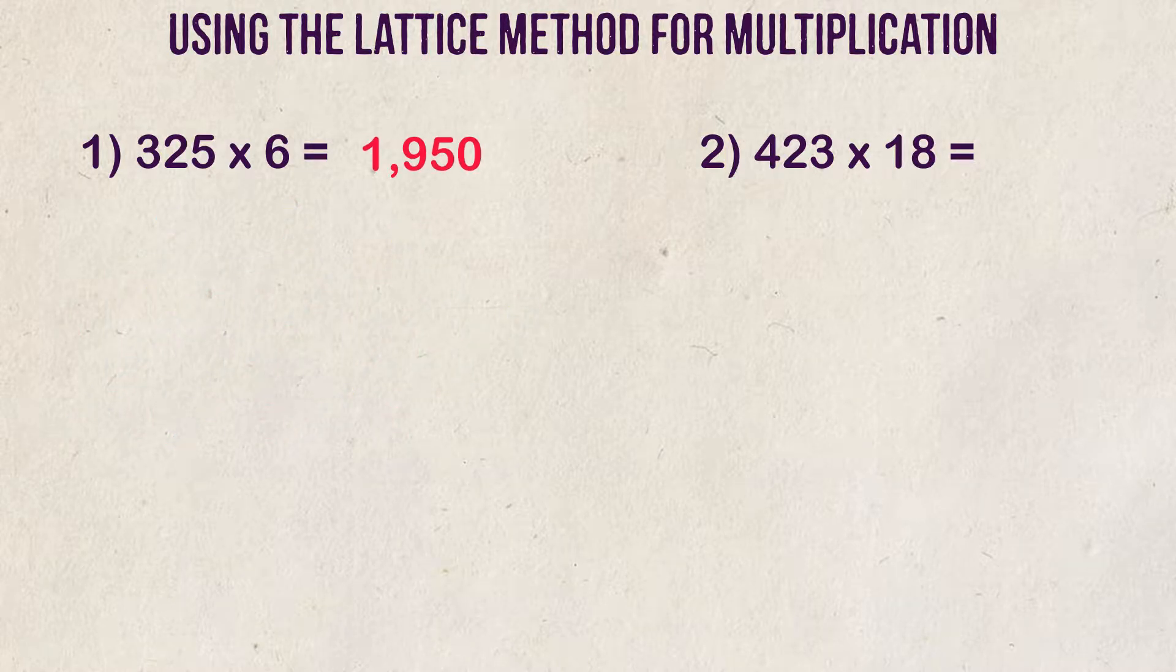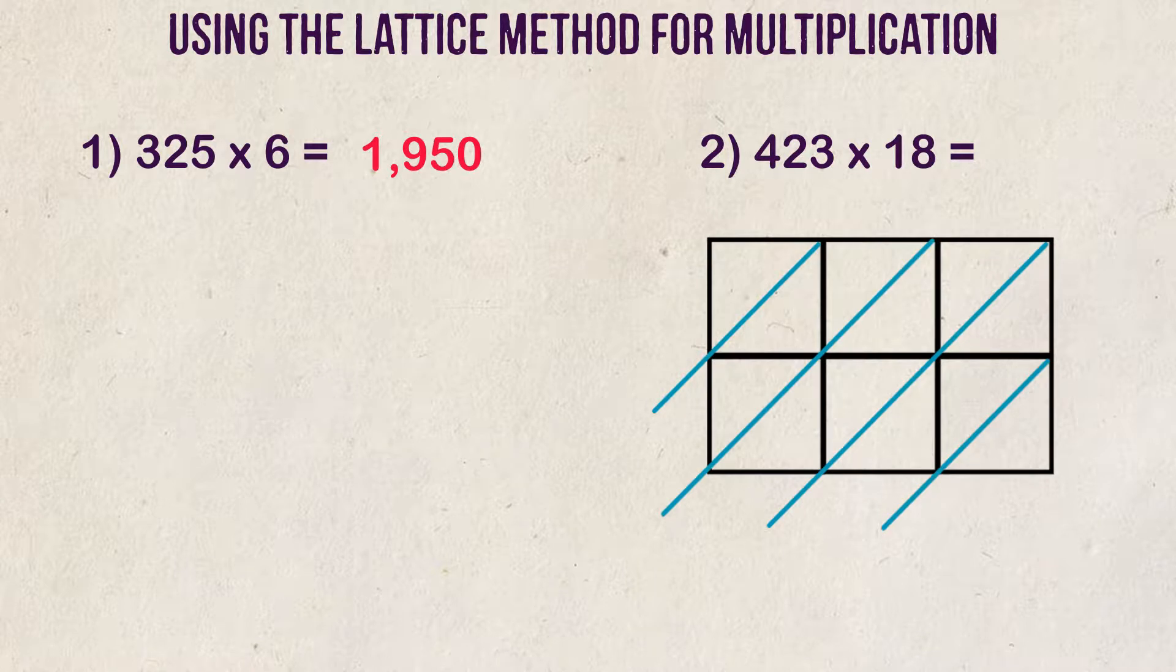Example 2. Let's multiply 423 times 18. To set up our lattice grid, we have 3 columns to put our 423 up top and 2 rows for 18. Let's add our diagonal lines and start multiplying.